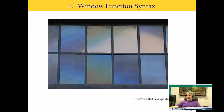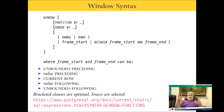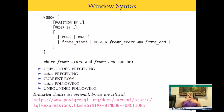Window function syntax consists of the word OVER, a parenthesis, then an optional partition clause, an optional ORDER BY clause, an optional RANGE or ROWS clause, and an optional frame clause. The frame definitions can be: UNBOUNDED PRECEDING, PRECEDING, CURRENT ROW, FOLLOWING, or UNBOUNDED FOLLOWING. This syntax comes directly from the Postgres docs. When we originally added window functions the docs were really hard to understand, but once you go through this presentation they'll make a lot more sense.